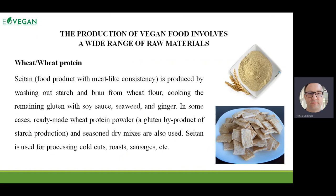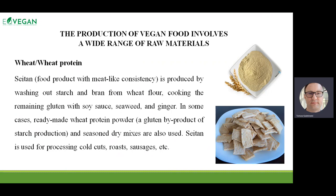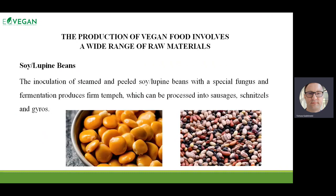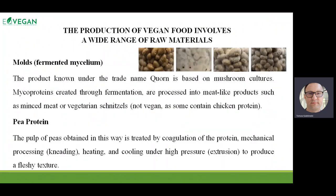Then wheat and wheat protein — the market offers a lot of different texturized wheat proteins we can use for scrambled eggs or as alternatives for different structures. Also soy, lupine beans, and other pea proteins — these are very rich, good quality protein products we can use to replace egg functionalities and build the texture of egg products.